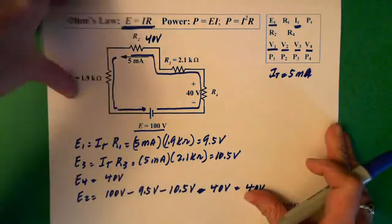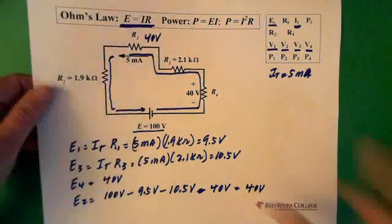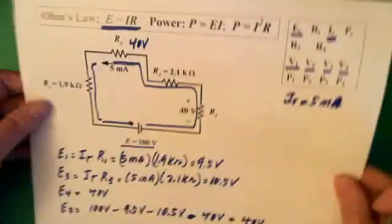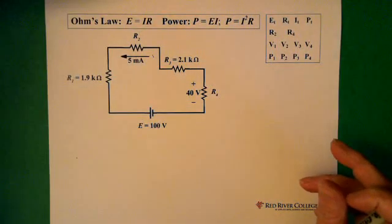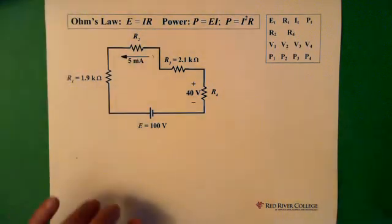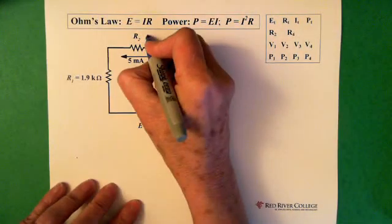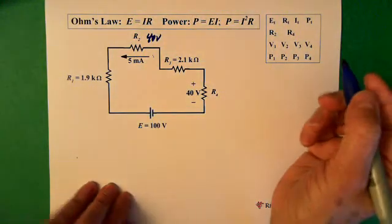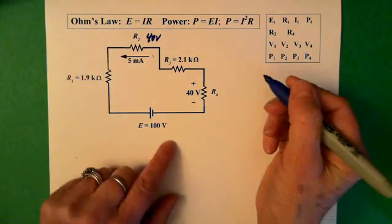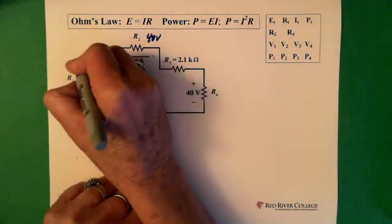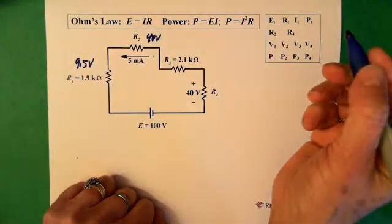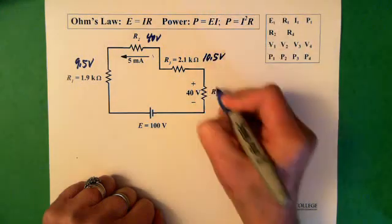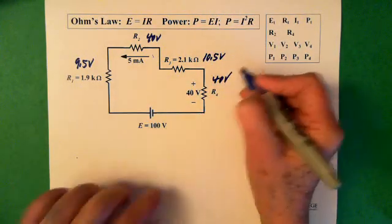Now let's go to the next page. I'm not sure that we need to carry the voltages with us, but I'll just keep the page handy. Alright, let's just write it down. So here we have 40 volts. E1 is 9.5 volts. E3 is 10.5 volts. And here we have 40 volts.